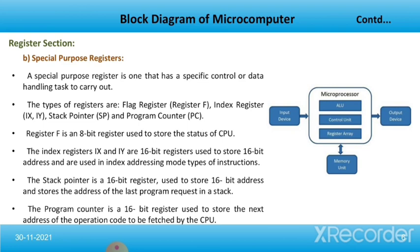Next is the special purpose register. A special purpose register is one that has a specific control or data handling task to carry out. The types include: flag register F, index registers IX and IY, stack pointer SP, and the program counter. Register F is an 8-bit register used to store the status of the CPU. The index registers IX and IY are 16-bit registers used to store 16-bit addresses in index addressing mode. The stack pointer SP is a 16-bit register that stores the address of the last program request in a stack. The program counter is a 16-bit register used to store the next address of the operation code to be fetched by the CPU.